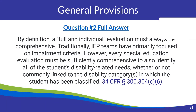This is a long answer in the bulletin, but it begins with: by definition, a full and individual evaluation must always be comprehensive. Traditionally, IEP teams have primarily focused on impairment criteria. However, every special education evaluation must be sufficiently comprehensive to also identify all of the student's disability-related needs, whether or not commonly linked to the disability categories in which the student has been identified — that last part is a direct quote from the Individuals with Disabilities Education Act.